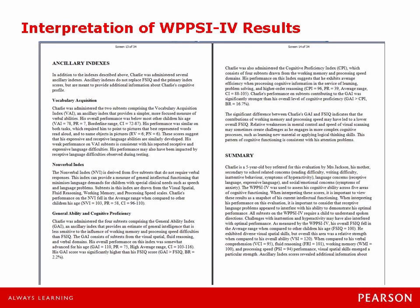As we flip the page again it moves on to more information included in the ancillary analysis — general ability and cognitive proficiency. This section is important because whether or not you interpret the GAI and CPI is based on a number of factors, but it does give you information that can help you make that decision. It talks about the significant difference between GAI and FSIQ and the contributions of working memory and processing speed, so please read that section and it will help you determine whether or not you need to further interpret the GAI and the CPI. The next section is the summary — a general summary of overall performance on the WPPSI-4. This is very comparable to your general findings that you'd put at the end of your report.